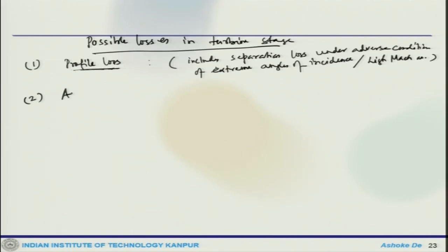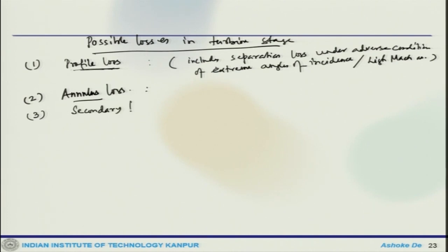Second is the annulus loss, which is associated with the boundary layer growth on the inner and outer walls of the annulus. Third is the secondary flow loss. This occurs when a wall boundary layer is turned through an angle by an adjacent curved surface, resulting in secondary flow losses.